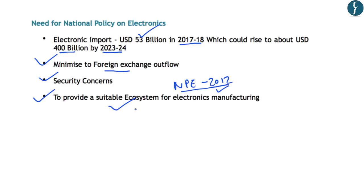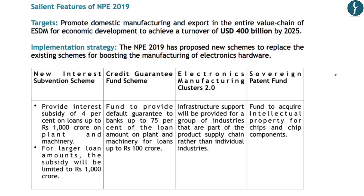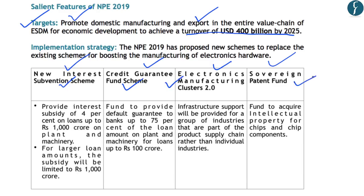The salient features of National Policy on Electronics 2019: while full details are yet to be released, the targets include a turnover of $400 billion by 2025. The basic aim is to promote domestic manufacturing and export in the entire value chain of electronics manufacturing. Four schemes are provided: the Interest Subvention Scheme, Credit Guarantee Fund Scheme, Electronics Manufacturing Clusters 2.0, and Sovereign Patent Fund. Under the Interest Subvention Scheme, an interest subsidy of 4% will be provided on loans up to ₹1,000 crore on plant and machinery.